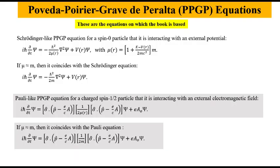Povetta-Poirier-Grave de Peralta (PPGP) Equations. These are the equations on which the book is based. The Schrödinger-like PPGP equation is for a spin-0 particle interacting with an external potential; if mu is almost equal to m, then it coincides with the Schrödinger equation. The Pauli-like PPGP equation is for a charged spin-1/2 particle interacting with an external electromagnetic field; if mu is almost equal to m, then it coincides with the Pauli equation.